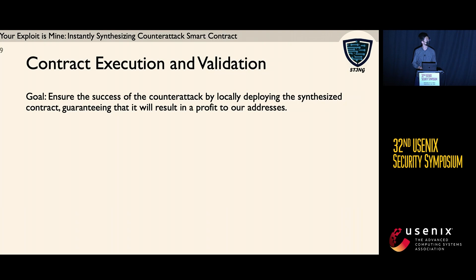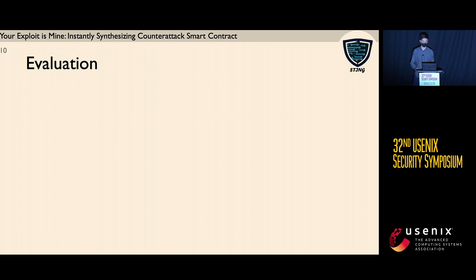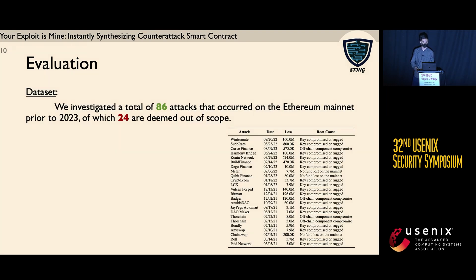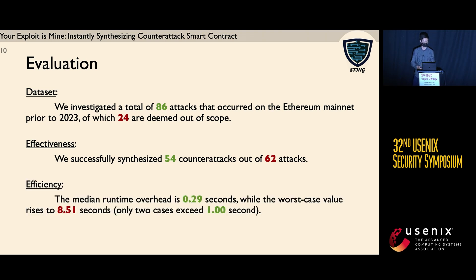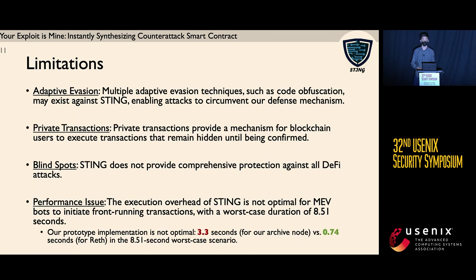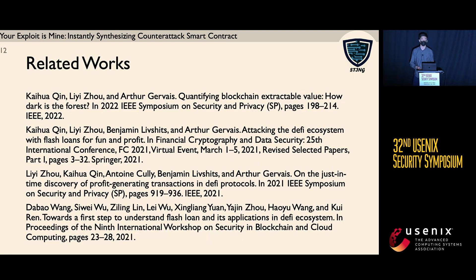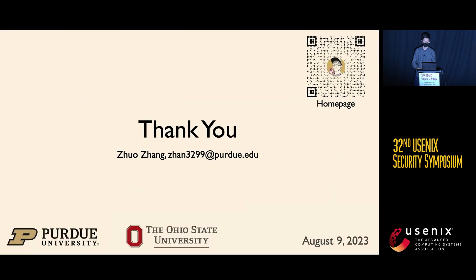The third phase is to locally validate that profits are sent to our account, in case we make any mistakes. We evaluate our technique using 86 attacks, of which 24 are out of scope. We successfully synthesize counter-attacks for 54 attacks. The median runtime overhead is 0.2 seconds, while the worst case is 8.5 seconds. We do have several limitations; detailed discussion can be found in our paper. That concludes my presentation, and I'm happy to take any questions.